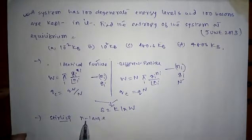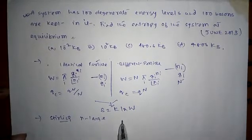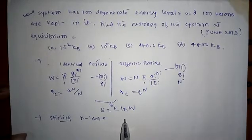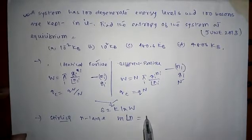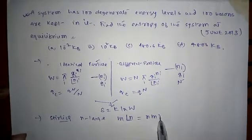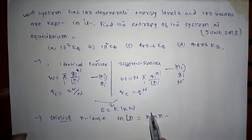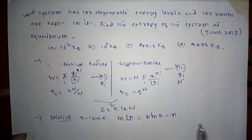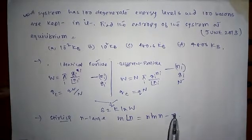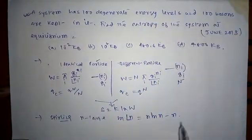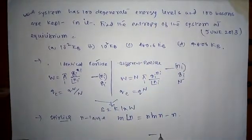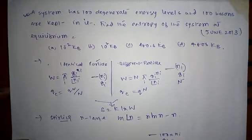Stirling's approximation: when N is large, ln(N!) equals N·ln(N) minus N. Since there are 100 particles, n_i equals 100 particles and g_i equals 100. There is one energy level.